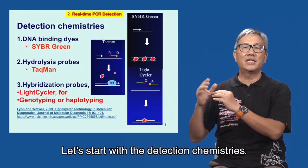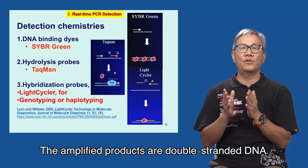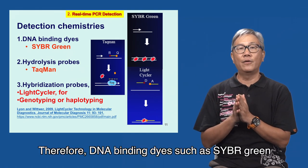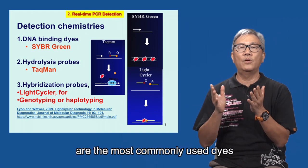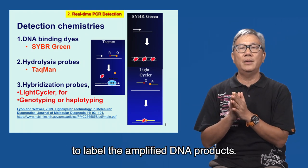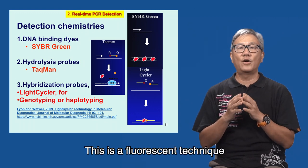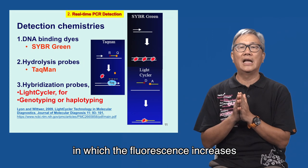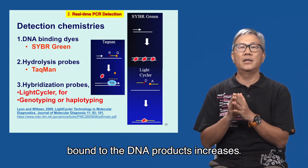Let's start with the detection chemistries. The amplified products are double-stranded DNA. Therefore, DNA binding dyes such as SYBR Green are the most commonly used dyes to label the amplified DNA products. This is a fluorescence technique in which the fluorescence increases as the amount of SYBR Green bound to the DNA products increases.